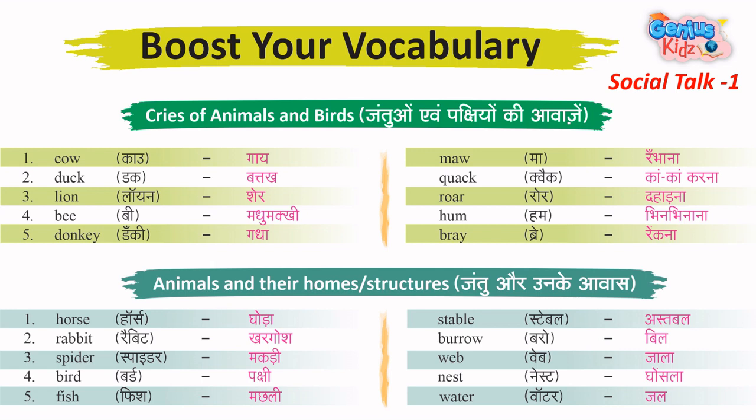3. Spider – Makkadi. Home: Web – Jala. 4. Bird – Pakshi. Home: Nest – Ghosala.